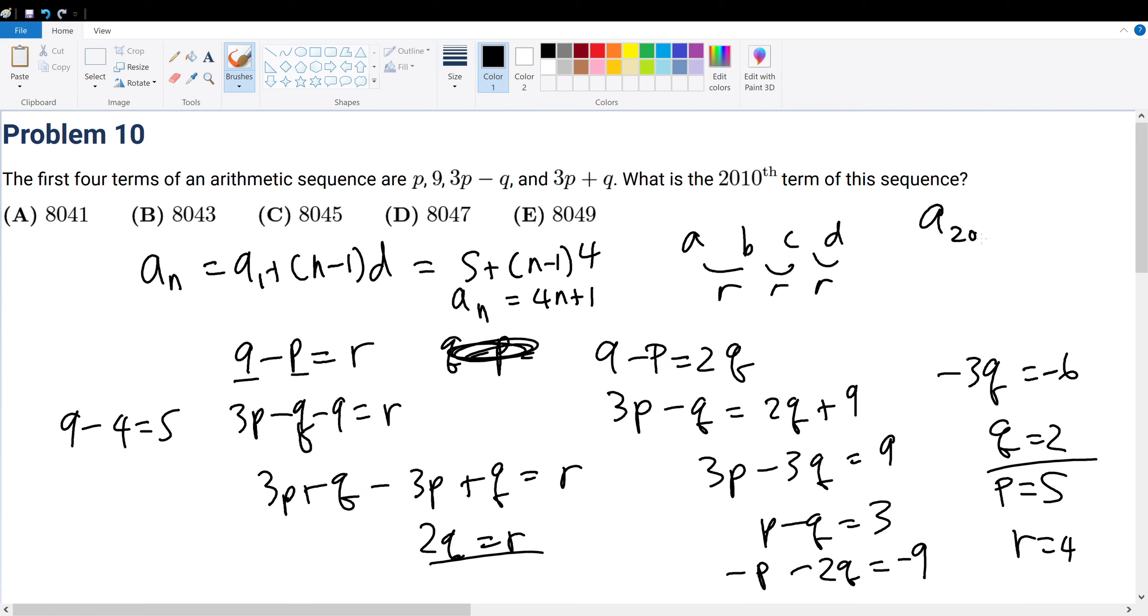What is the 2010th term? Well, that's just a of 2010, which is equal to 4 times 2010, which is 8040 plus 1, which is 8041, bringing you to answer choice A.